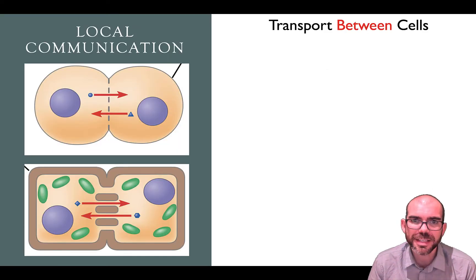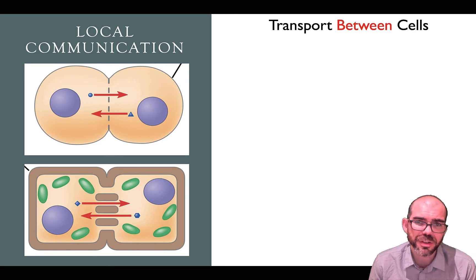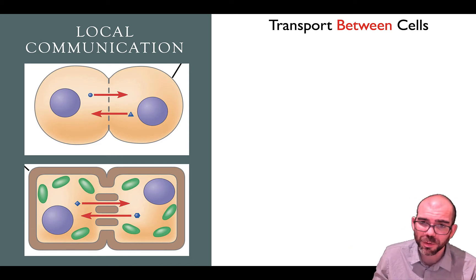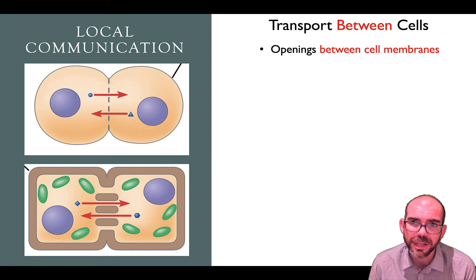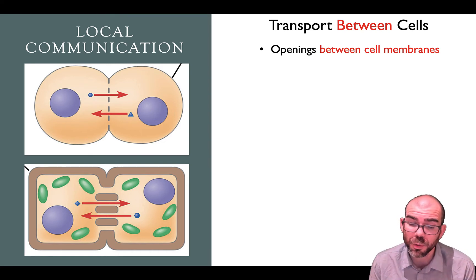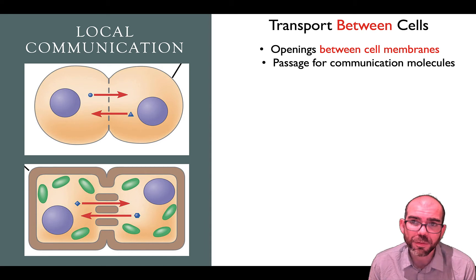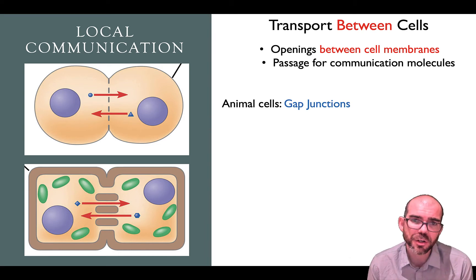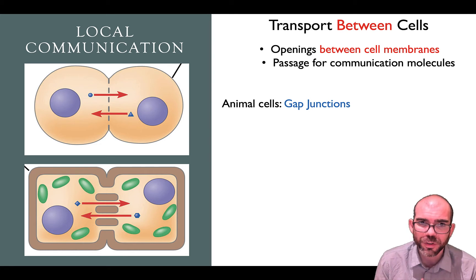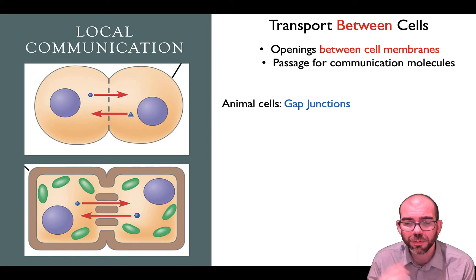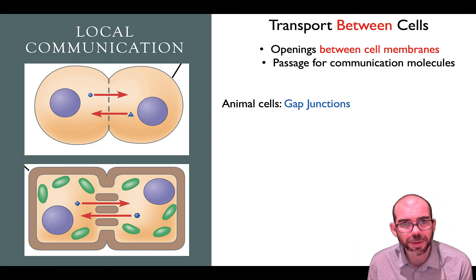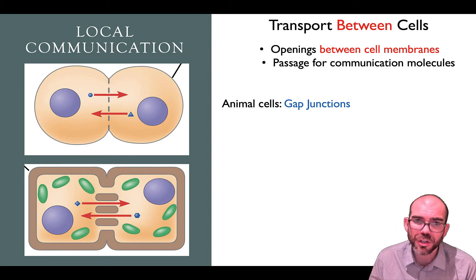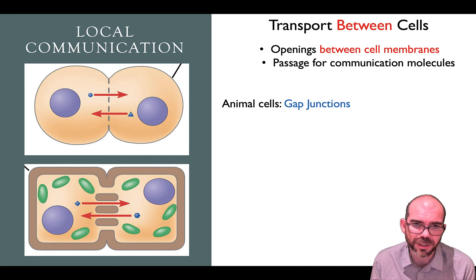Let's look at some examples of local communication. Often the communication is as local as transporting from one cell to a nearby cell. Cells that contact each other will have openings between them. For animal cells, we call these gap junctions. One cell will send a molecule through that gap junction to a nearby cell, and that'll be the transmission and receiving of the message.